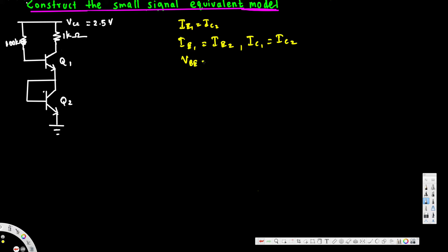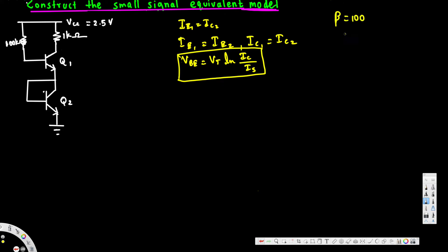vbe can be replaced with vt times ln of ic over Is — this is the generic formula. Three values are provided: beta is equal to 100, and Is is equal to 6 times 10 to the power of minus 16 amperes.